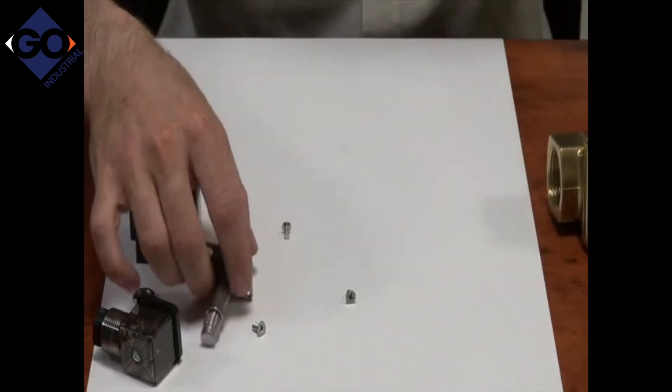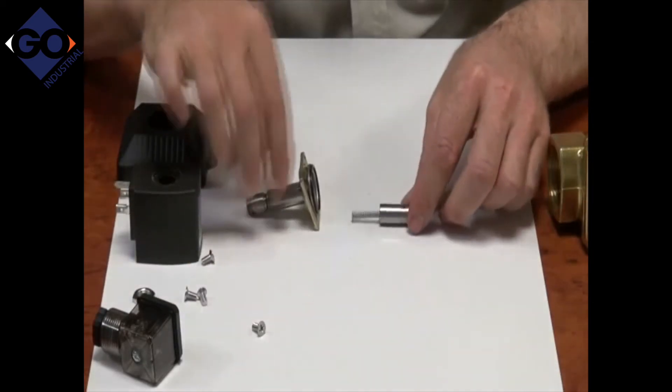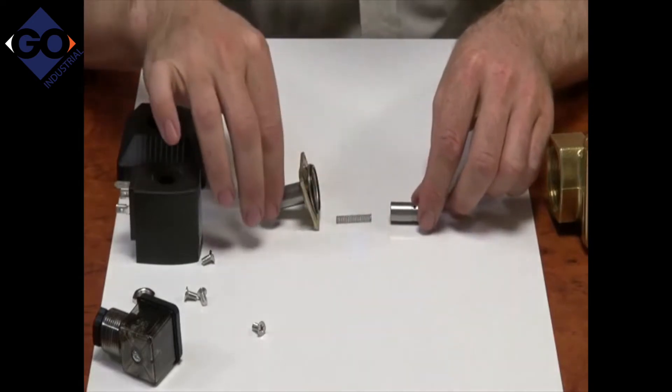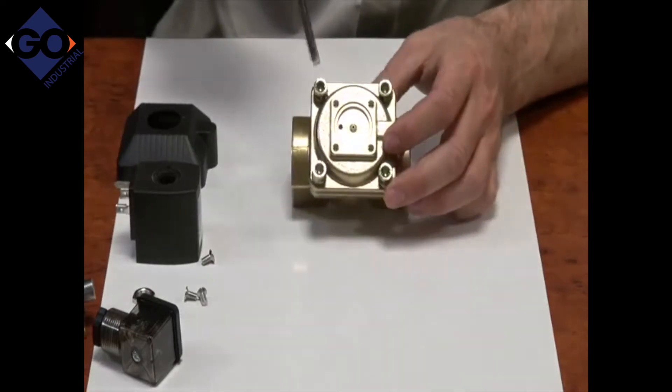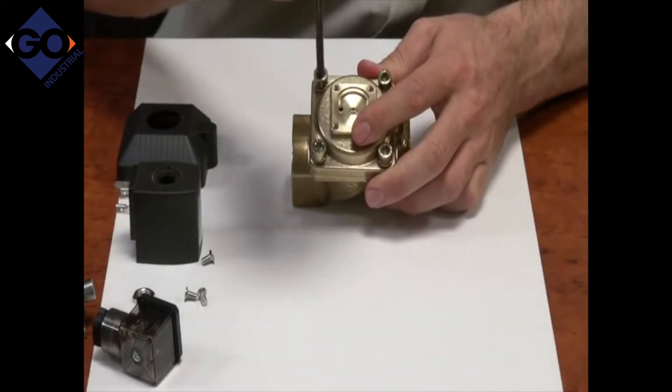Inside the operator, we have the armature and the spring. Now if you want to look inside the valve, you'll need an Allen key. Loosen these four bolts off.